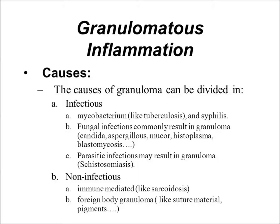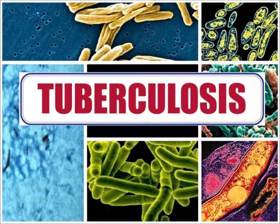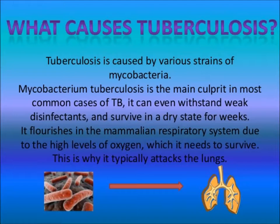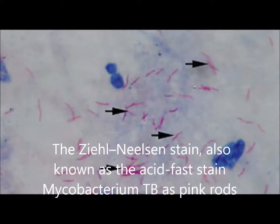Today we will discuss the prototype: tuberculosis. Tuberculosis is a common disease in Pakistan. It is caused by Mycobacterium tuberculosis, a special type of bacteria which cannot be stained with the normal Gram staining. It is stained by a special stain called Ziehl-Neelsen stain. These bacteria are also called acid-fast.